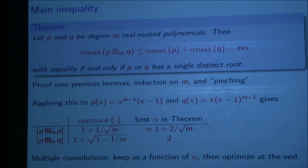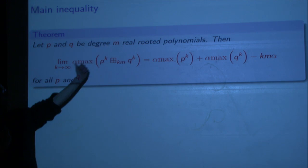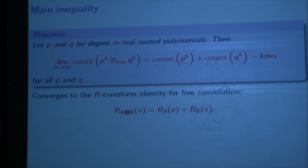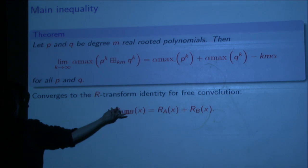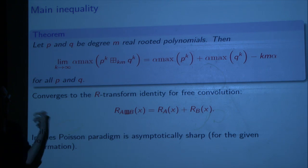We can get very good bounds on these alpha-maxes. If p is a degree-m real-rooted polynomial, the derivative of alpha-max lies between 1 and essentially 2. We can get bounds on p' given p. If you iterate this m-1 times, the alpha-max of p minus m*alpha lies between the expected value of the roots and the largest root, giving some indication of where you are. Our main inequality is that the alpha-max of (p plus-box_m q) is less than or equal to the alpha-max of p plus the alpha-max of q minus m*alpha. The proof uses previous lemmas and induction. Applied to our previous example, this bound now goes down to 1 + 2/sqrt(m), much closer to the correct 1 + 1/sqrt(m) than the triangle inequality's bound of 2.